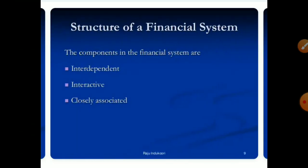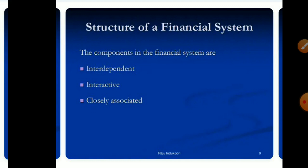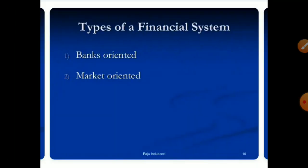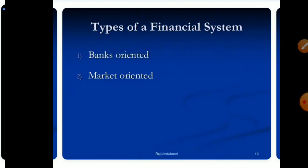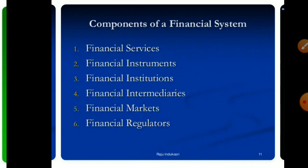For the structure of the financial system, here are some components that are considered interdependent and interactive, even closely associated. The financial system can be divided into bank-oriented and market-oriented types. Components of the financial system include services, instruments, institutions, intermediaries, markets, and regulators.